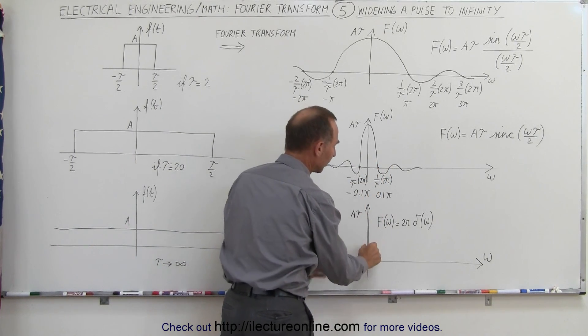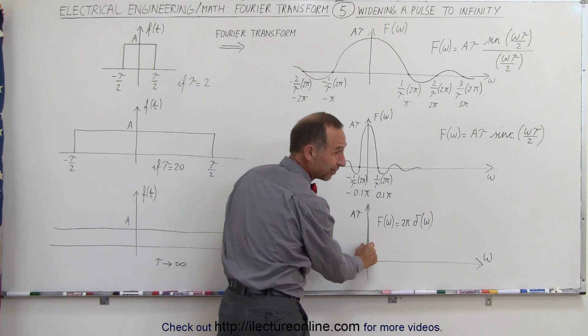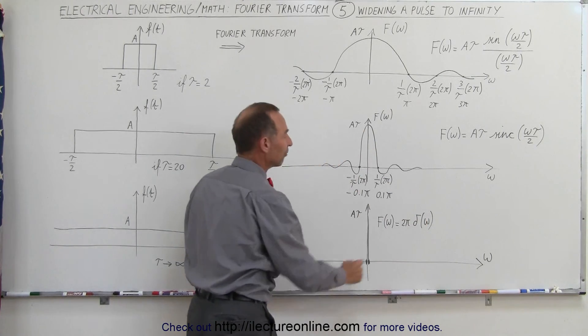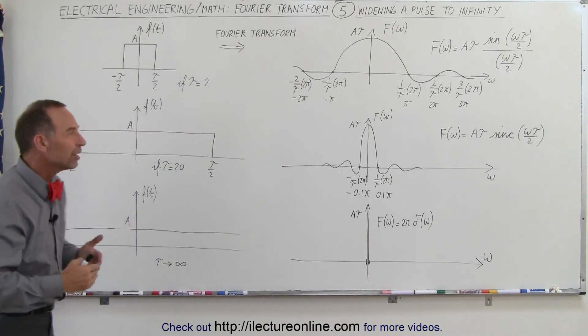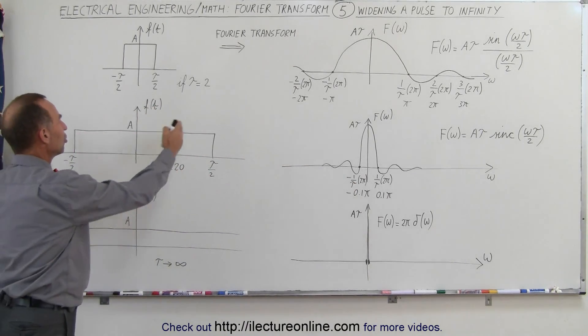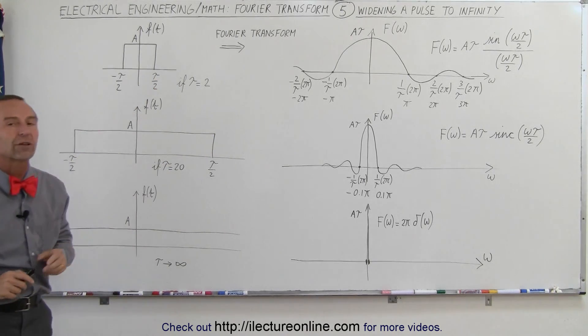Eventually when it becomes infinitely thin, zero width, and infinite height, you end up with a delta function plus a scale factor of 2 pi. So that gives you a feel of how the change in the pulse width changes the Fourier transform.